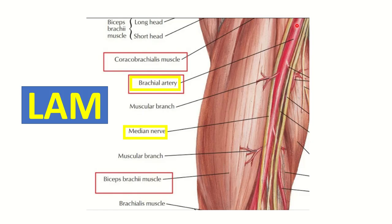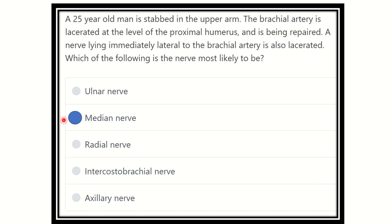In this picture we can also see the brachial artery, the biceps brachii muscle, and lateral to the brachial artery is the median nerve. It then runs anterior to the brachial artery, and finally medial. We can remember this as the mnemonic 'LAM' — first Lateral, then Anterior, then Medial — so the relation of the median nerve to the brachial artery is LAM.